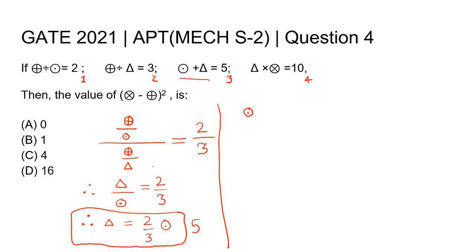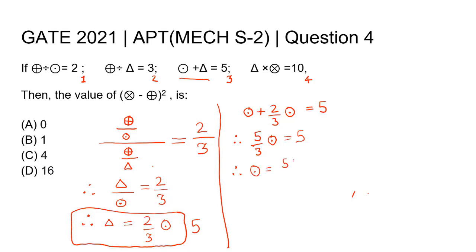From equations 3 and 5: 1 circle plus 2/3 circle gives 5/3 circle equals 5. Therefore, the value of circle-with-dot becomes 5 × (3/5), which is equal to 3.